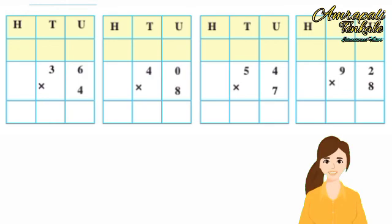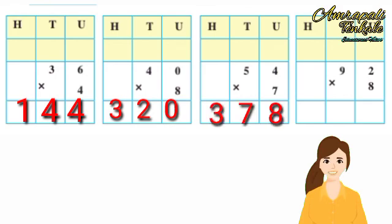36 multiply by 4 is equal to 144. 40 multiply by 8 is equal to 320. 54 multiply by 7 is equal to 378. 92 multiply by 8 is equal to 736.